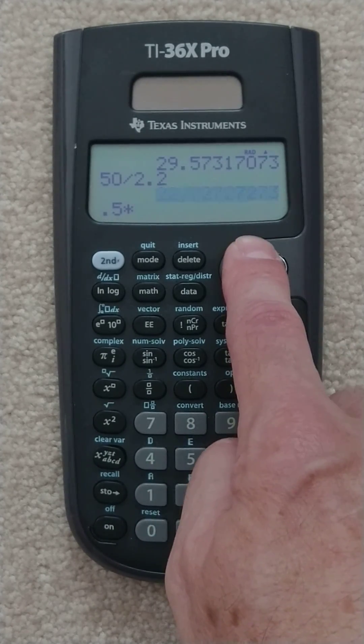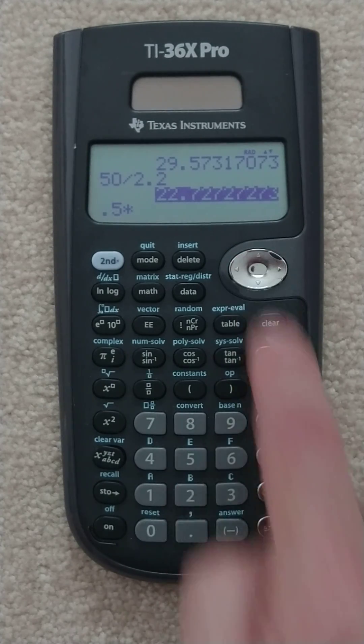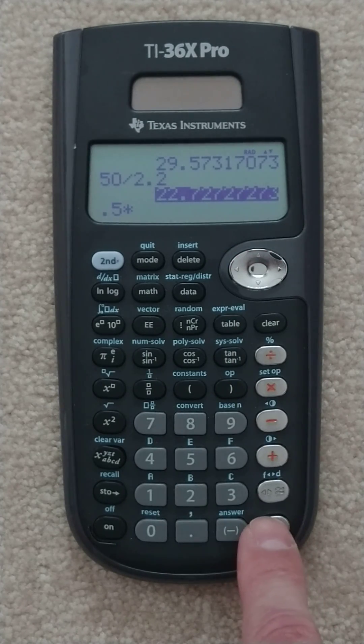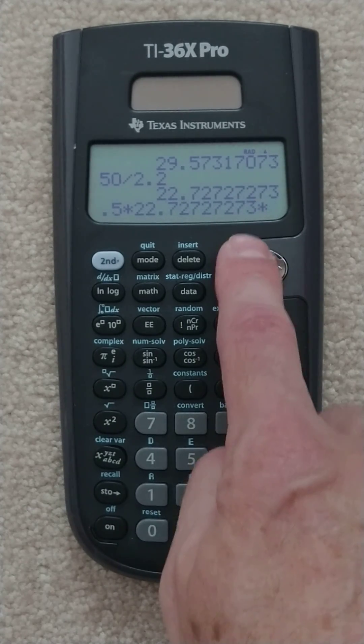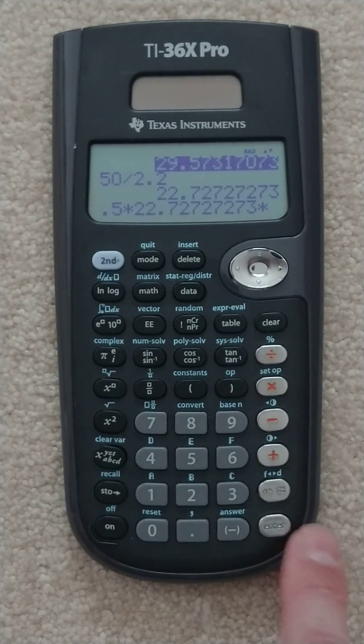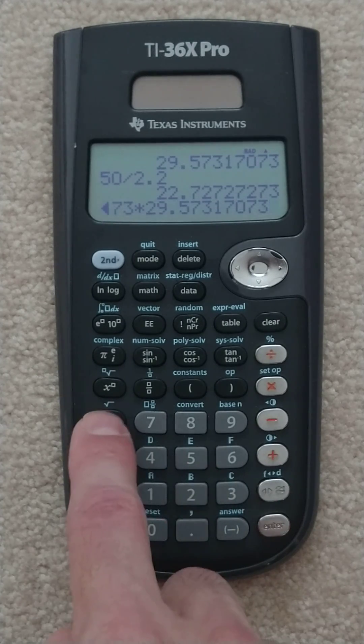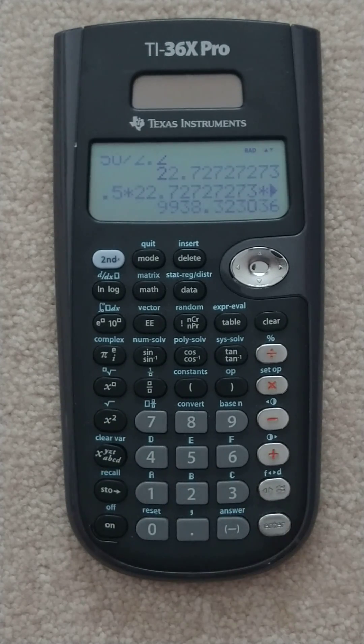And this is what's great about the TI. I can just go up there, hit the d-pad and go up, grab my mass, and then multiply by, go back up, grab the velocity, square it, and get our answer. 9,938 joules.